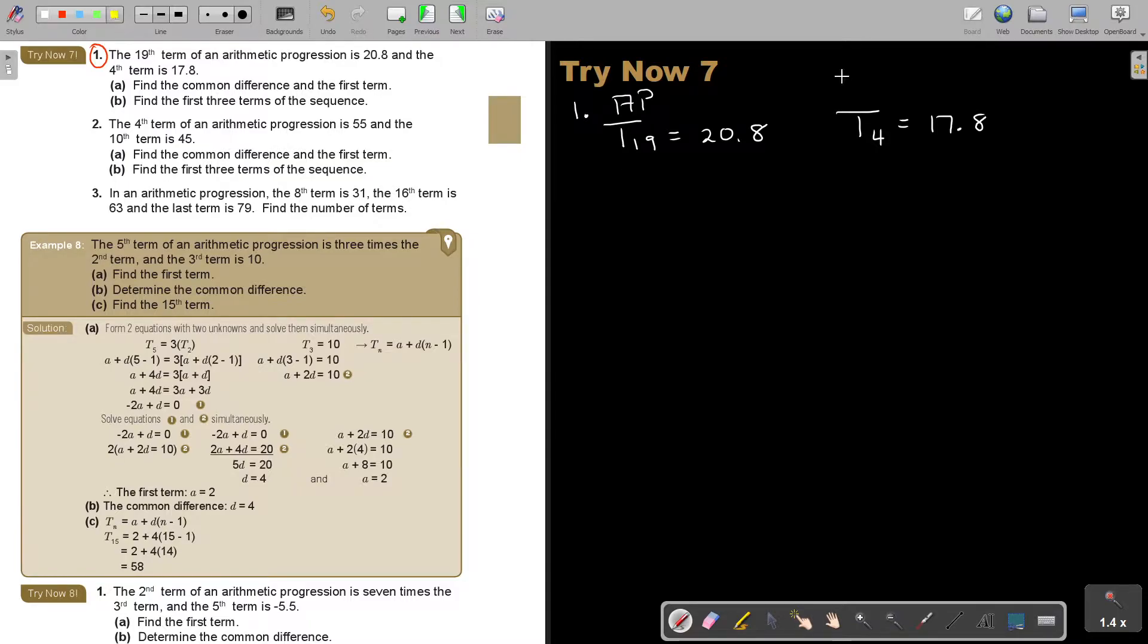Don't forget my formula. TN equals A plus bracket N minus 1 D. So if I'm substituting it, I'm going to get A. I can use the yellow. So A, let's just substitute it already.